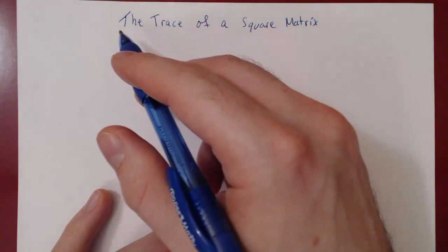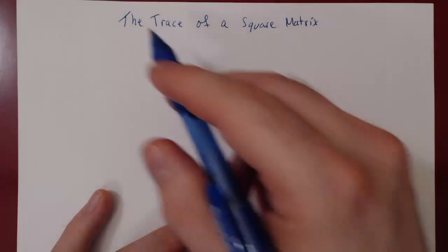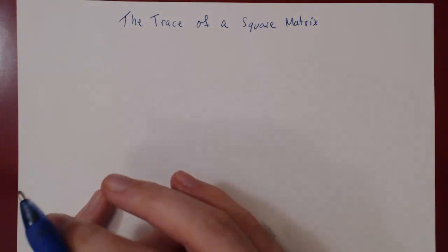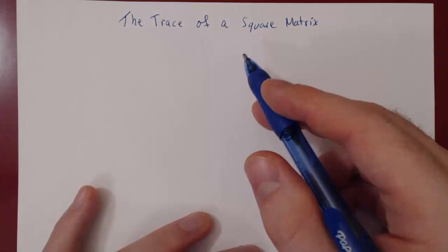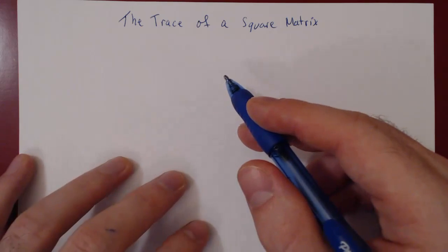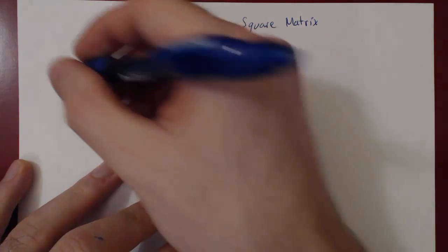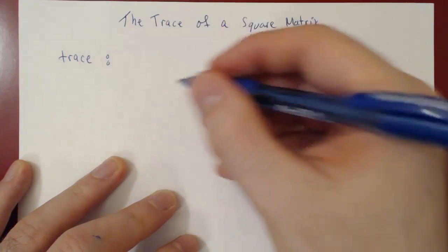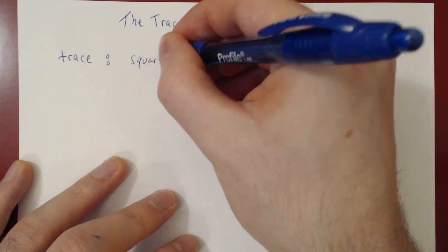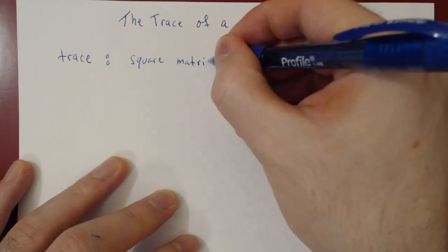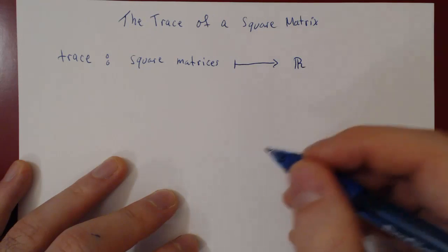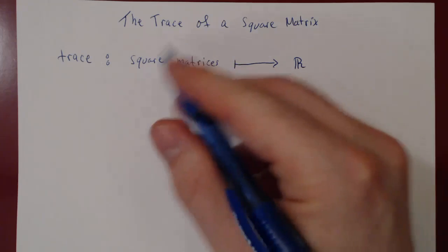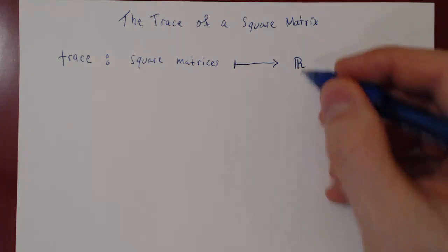In this video we will introduce the trace of a square matrix. The trace is a function from square matrices to the real numbers. It is a very simple function, but it has some interesting properties that we can sometimes take advantage of. The trace takes a square matrix and outputs a real number.